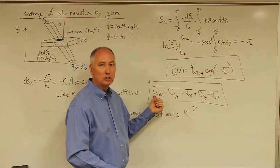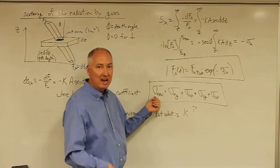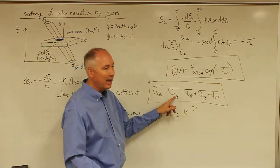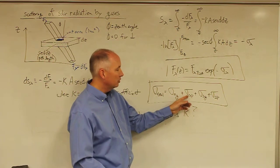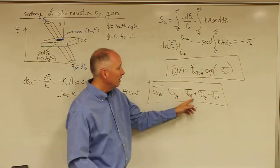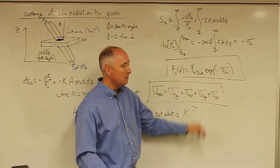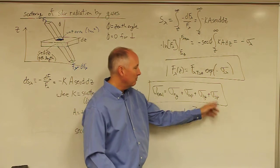The total optical depth of the atmosphere is equal to the optical depth due to the absorption by gases, plus the optical depth due to the absorption by particles, plus the optical depth due to scattering by gases plus the optical depth due to scattering by particles.